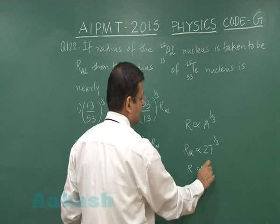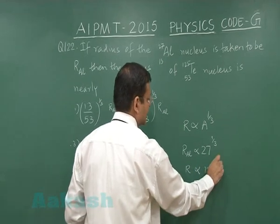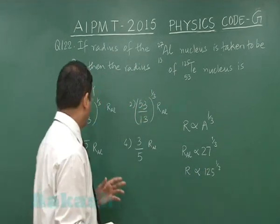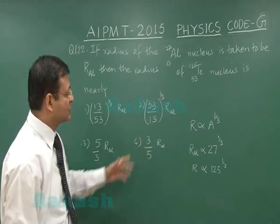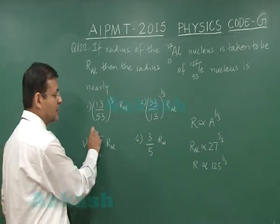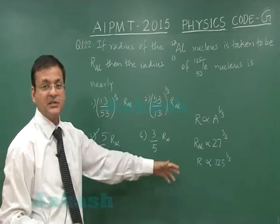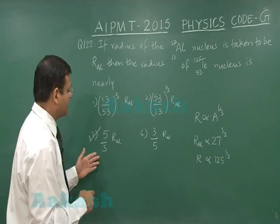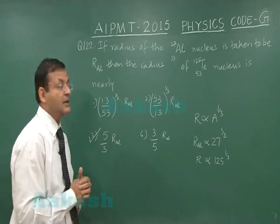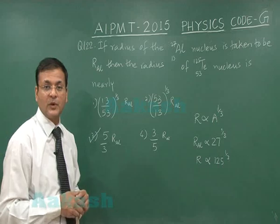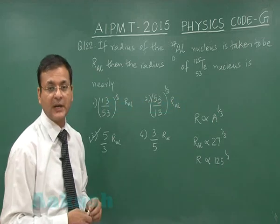If you divide these two expressions, the most appropriate answer will be the third one. R is 5 by 3 times R_Al, so that is the answer to question 122.